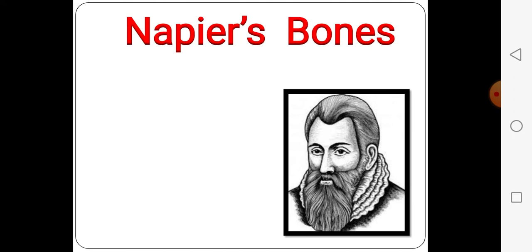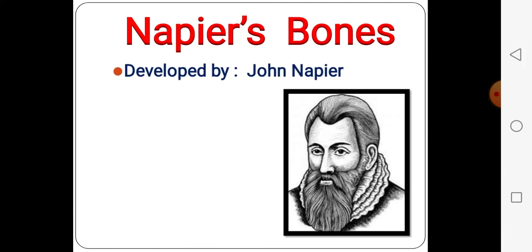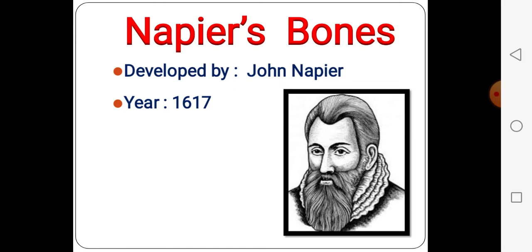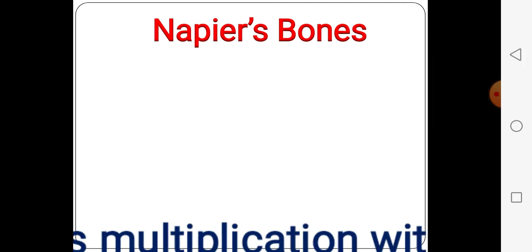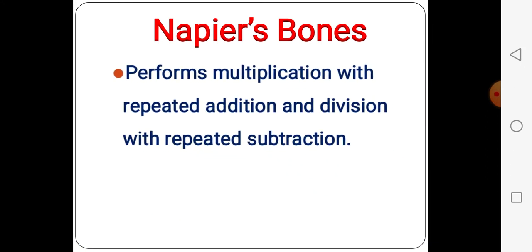The second one is Napier's bones. It is developed by John Napier in 1617. Napier's bones perform multiplication with repeated addition and division with repeated subtraction. In Napier's bones we can do multiplication and division only — no addition, no subtraction. Keep it in your mind.